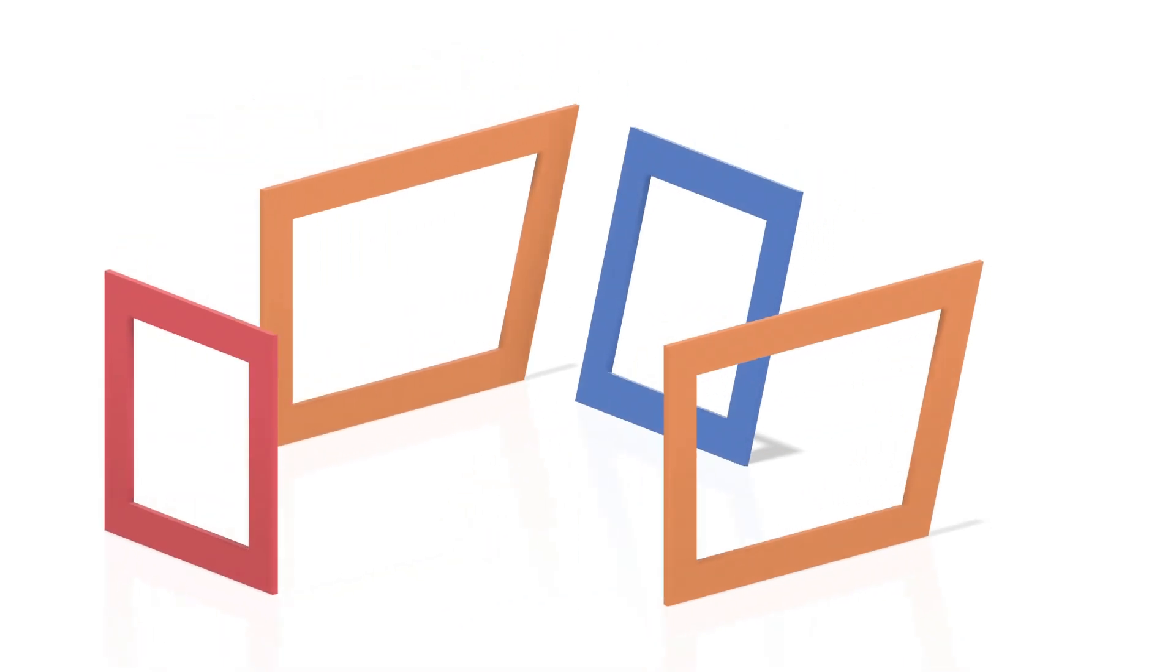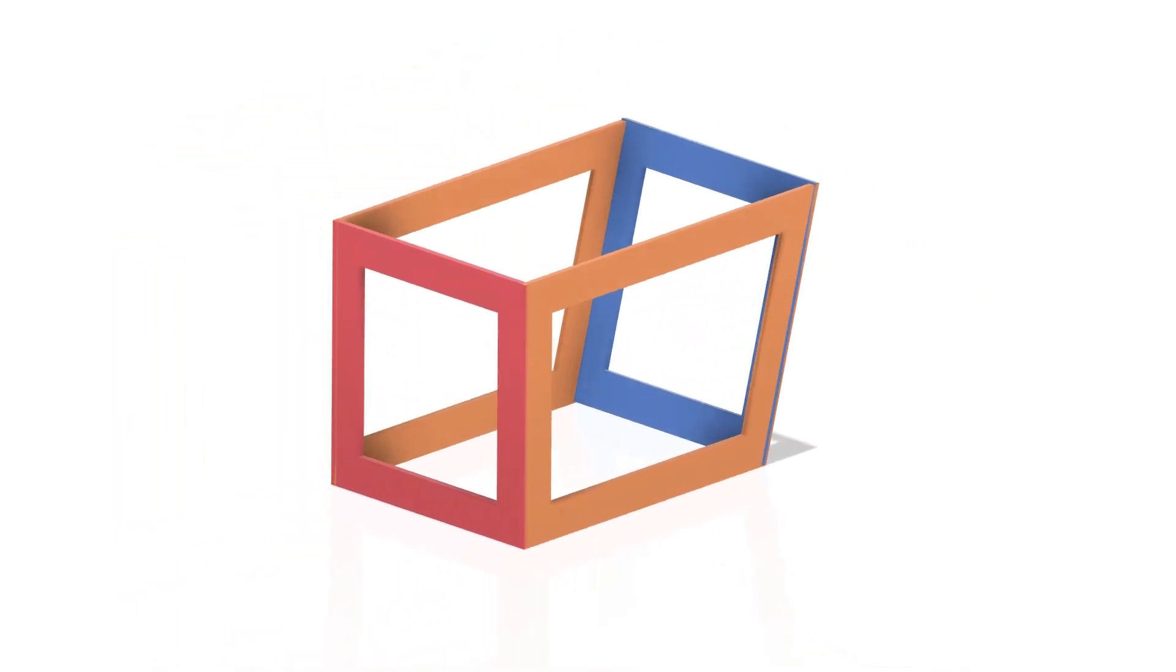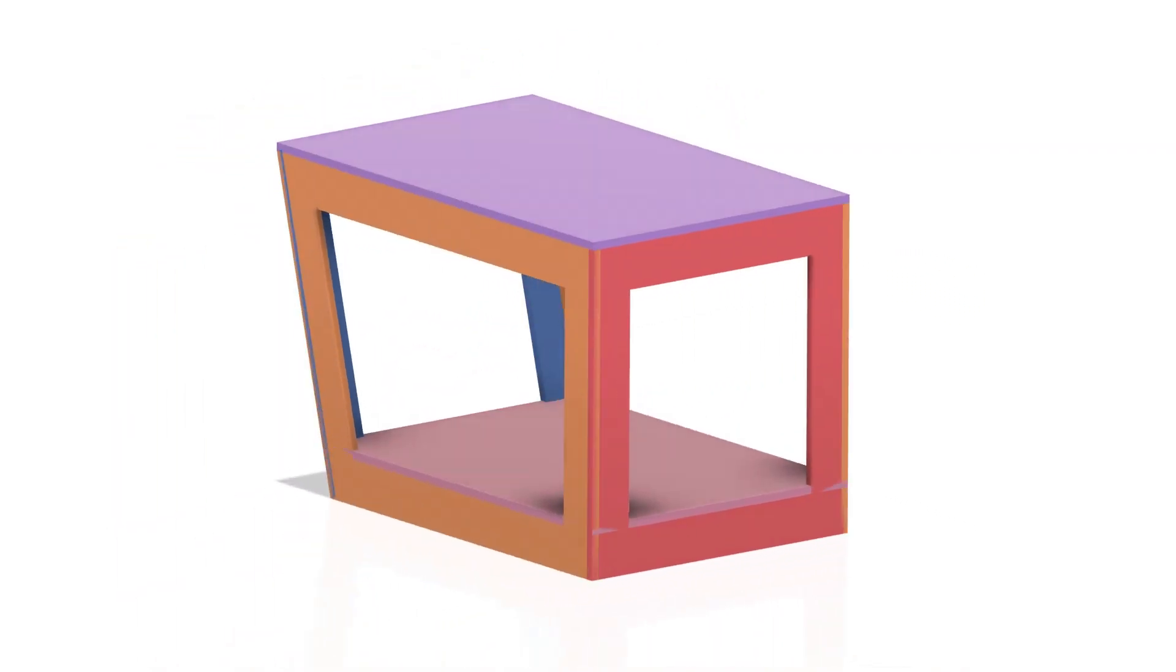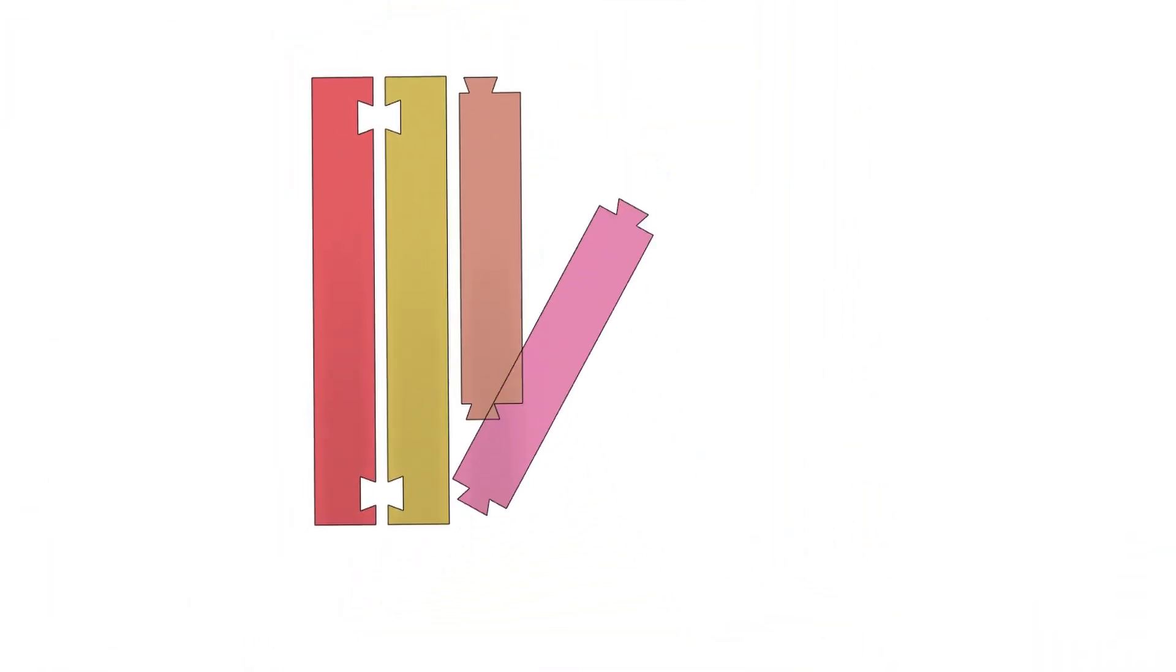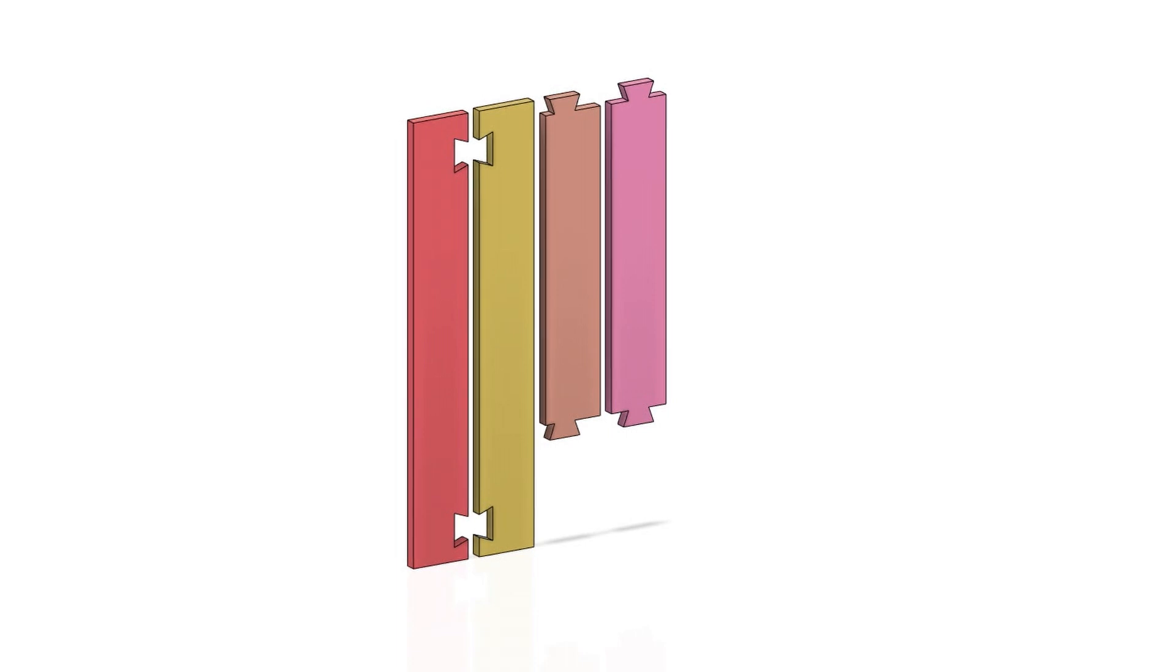So I came up with the idea of having four different side frames that would support the tabletop and the shelf for accessories. Each frame would consist of four pieces, two horizontal and two vertical. This way we could save some material.